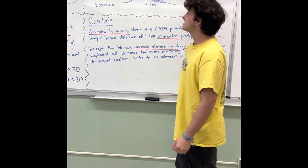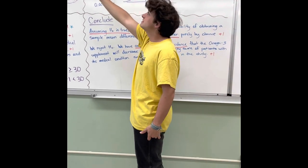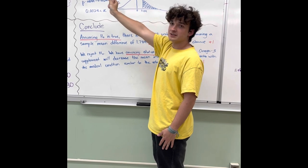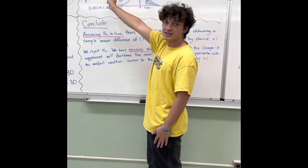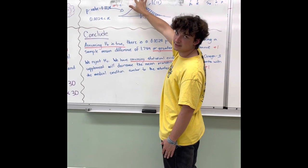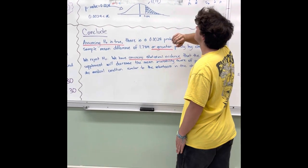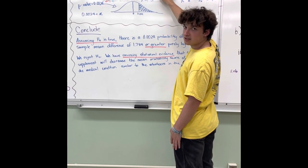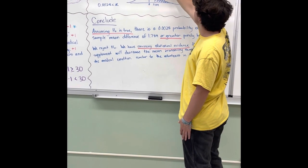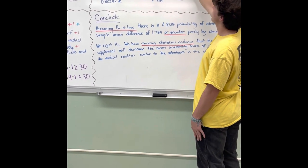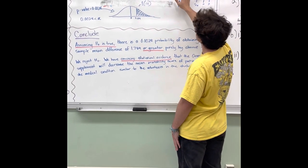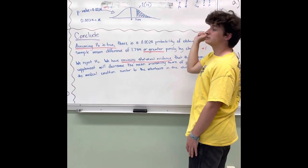Now we're going to calculate the test statistic and the p-value. We use the standardized formula: statistic minus parameter divided by standard error. The standard error is the standard deviation from the problem divided by the square root of n, which is 2.485 divided by the square root of 19, approximately 0.57. The statistic is the x-bar difference of 1.789, and the parameter assuming the null is true is 0. That gives us a test statistic of 3.139, and you'll get a point for that.